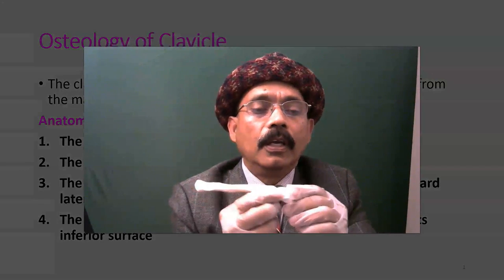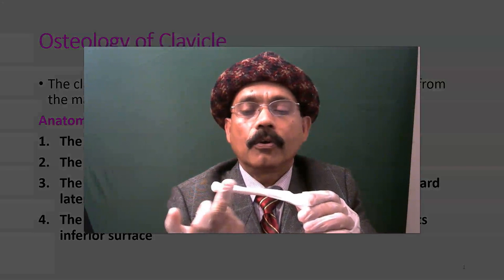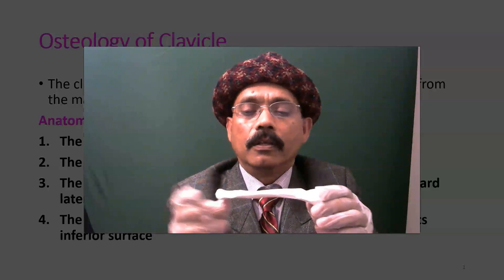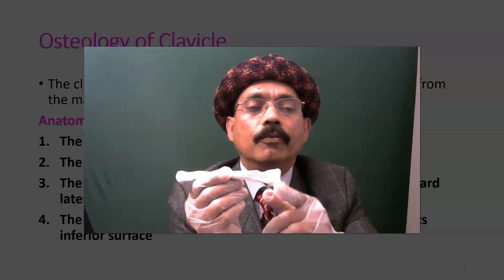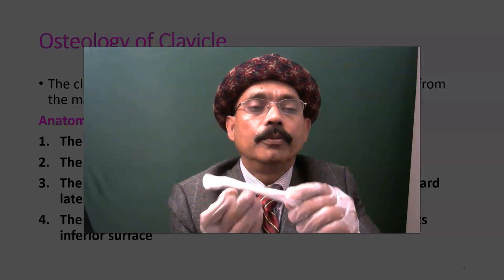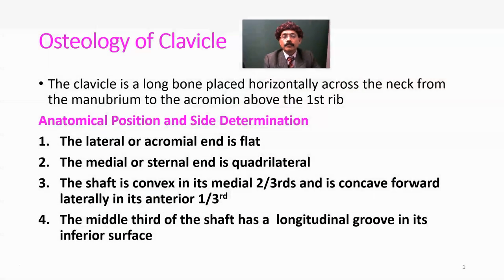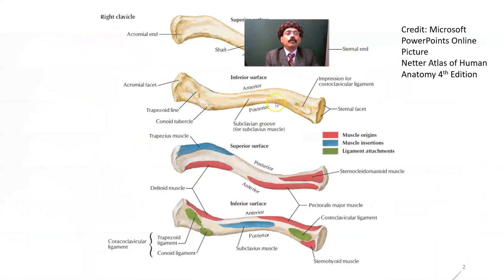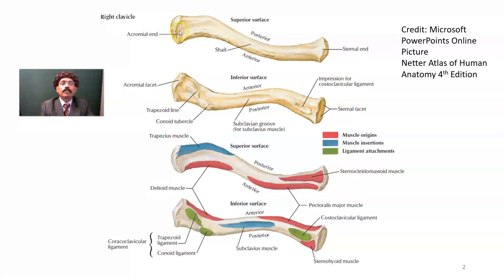This is the clavicle. The anterior two-thirds is convex. The lateral one-third is concave and it is flattened at the lateral part. The medial part or sternal part is quadrilateral. On the surface we have a subclavian groove. The acromion end or lateral end is flattened, and the sternal end is quadrilateral.